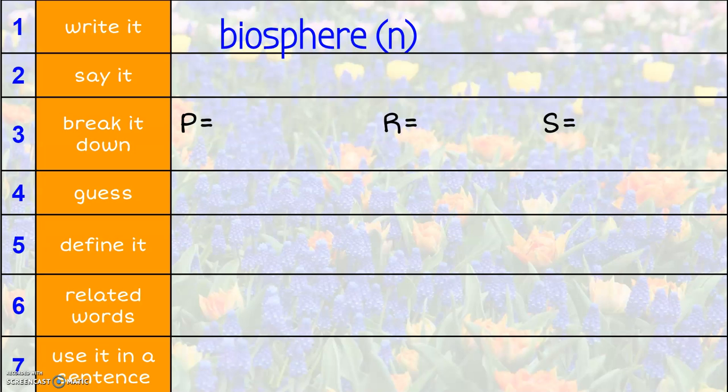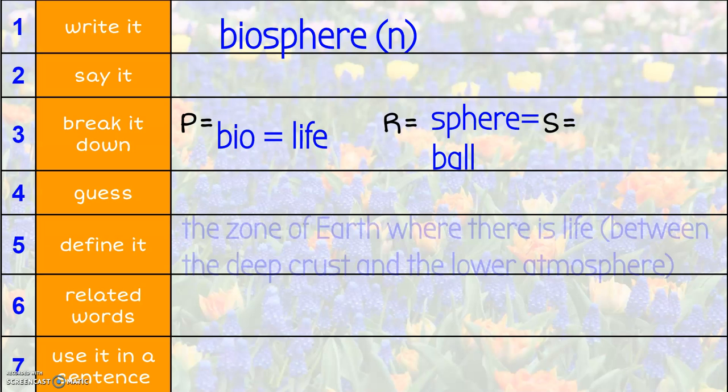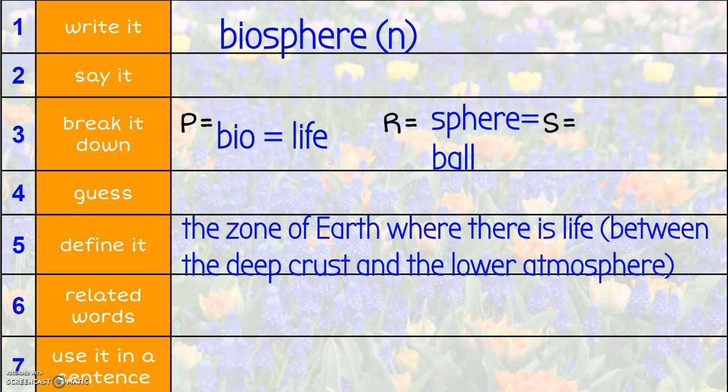After your sentence, you can go on to the next word, which is biosphere. Biosphere is a noun. You are typing the word next to my word biosphere. And again, a biosphere is a thing. It might be considered a place. It's definitely not a person though. All right, so we've got bio meaning life. And we have sphere meaning ball. And so when we make our guess, it's got to have life and ball in it. So I guess your guess could be a life ball or a ball of life or a ball that has life in it. The actual definition though is the zone of earth where there is life between the deep crust and the lower atmosphere.